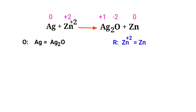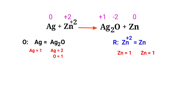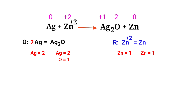Now balance the number of atoms in the two half reactions. In the oxidation half reaction, to balance the silver atoms we need to put a coefficient of two in front of Ag. The silver atoms are now balanced. Next, balance the oxygen atoms by producing water molecules.